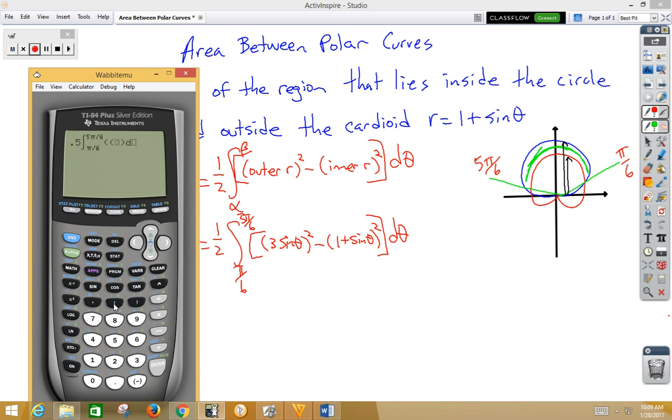And parentheses, our first function, 3 sine theta, close the theta parentheses, close the 3 sine theta parentheses squared, minus another set of parentheses for our second function, 1 plus sine theta. Close our parentheses for the theta, close our parentheses for the 1 plus sine theta squared, and we want d theta.